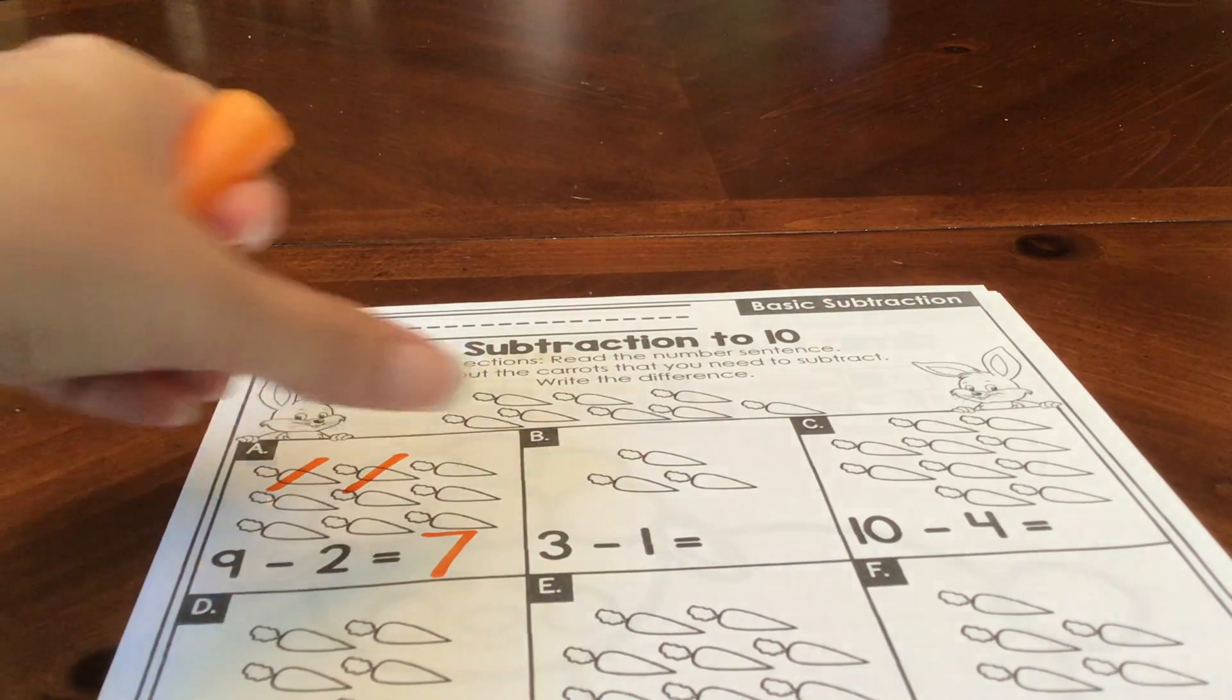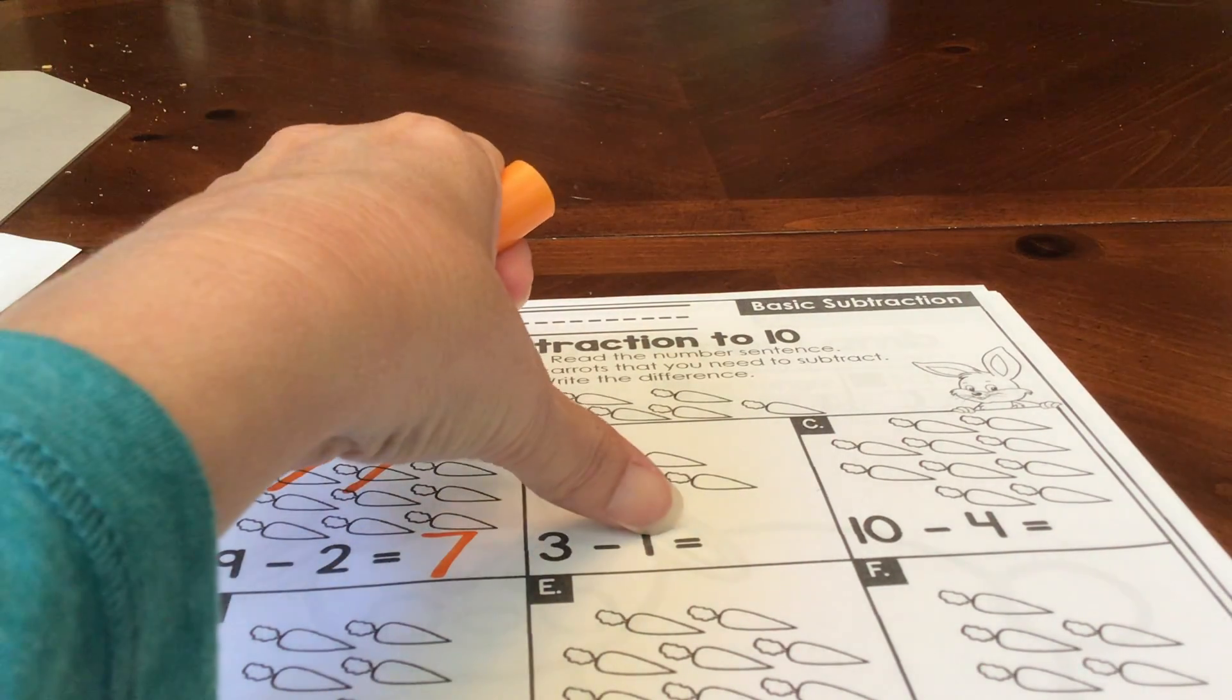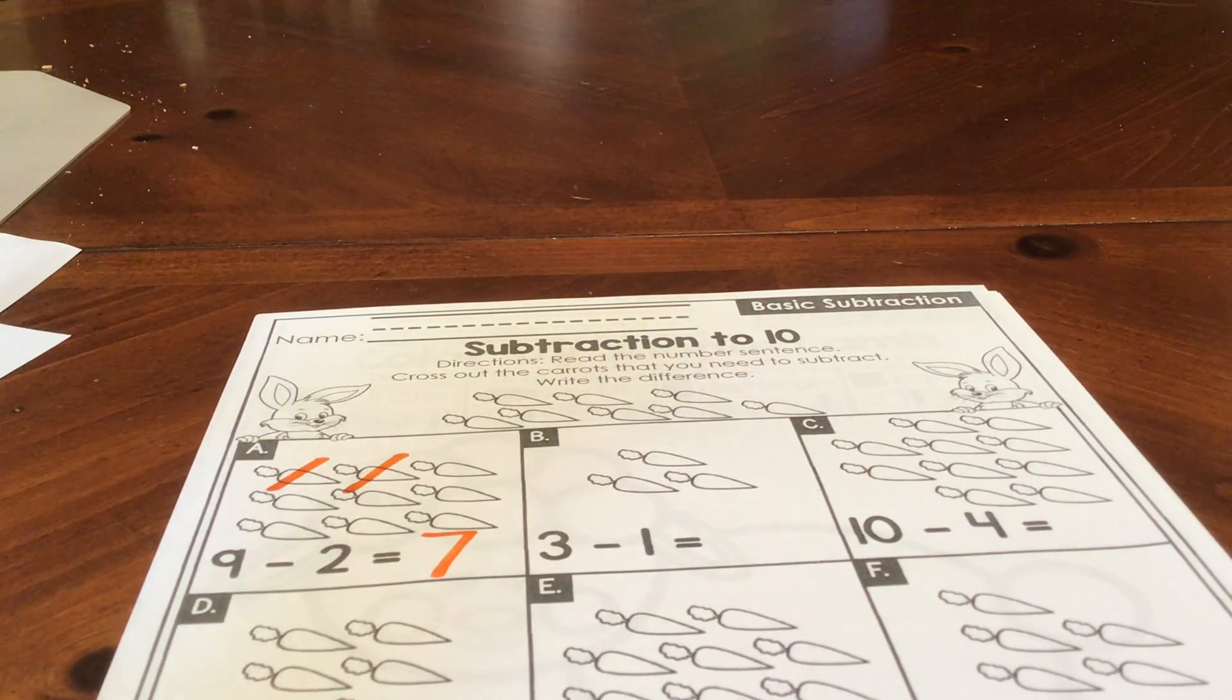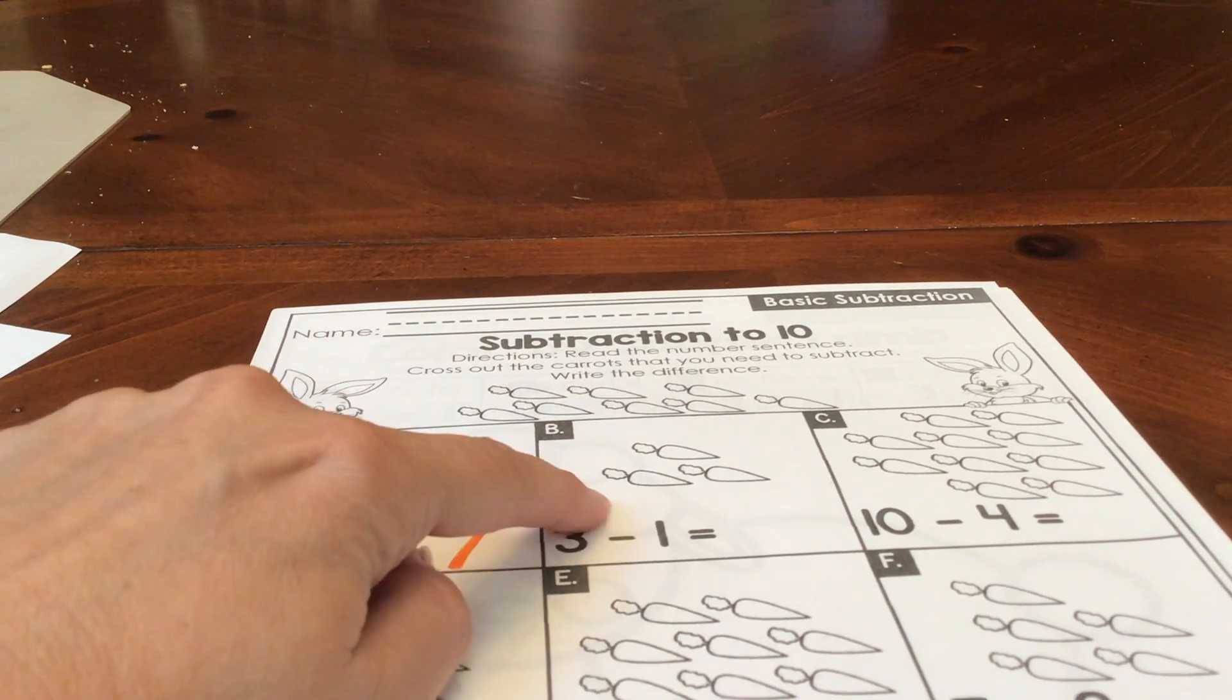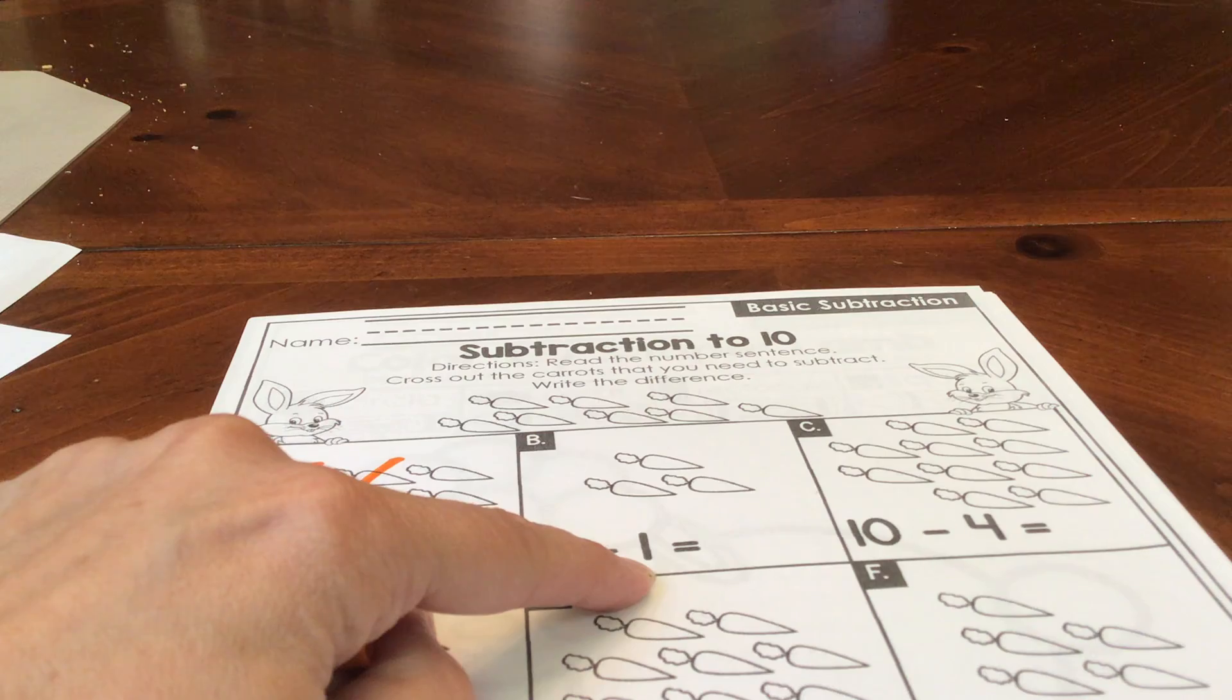So you're going to do the next one the same way. Let's read it. Three minus one equals blank. Pretend like the bunny's coming. There are three carrots in a basket. The bunny is going to eat one of them.